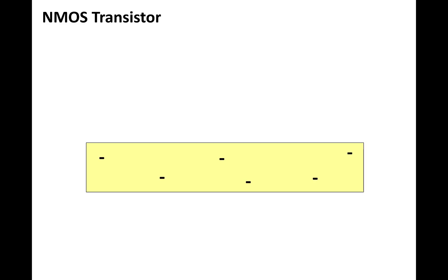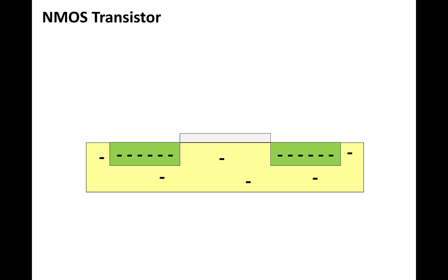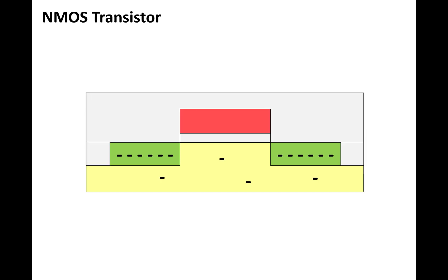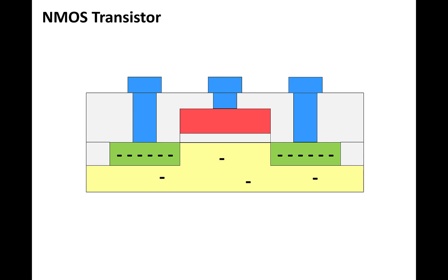Here's the structure of an NMOS transistor. It starts with a substrate of silicon that's been infused with a material like boron so that there's a low concentration of negative charge. Next, we create the source and drain areas by diffusing in a material like phosphorus or arsenic that produces regions with a high concentration of negative charge. Then, a thin layer of glass is grown between the source and the drain on top of the silicon, and the gate is added on top of that so that the glass forms an insulator between the gate and the silicon substrate. The rest of the device is then covered with an insulating layer of glass, and holes are cut through the glass and metal is added to make contacts to the source, gate, and drain.